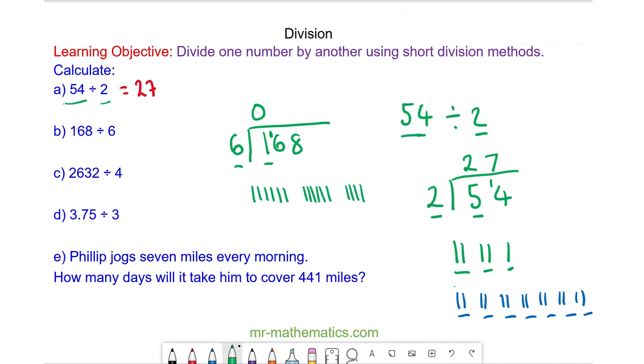Here we have 16 and you can see we have 2 6s with 4 left over.